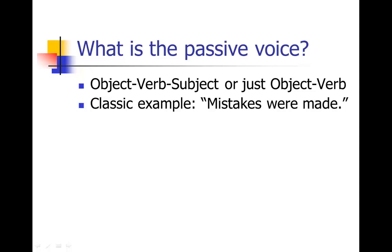The classic example of the passive voice is the sentence: Mistakes were made. Notice that's in the passive voice because the object — what was made — is the mistake, so the object starts that sentence. Then we get the passive verb, were made. And then there's no subject, so we don't know who made the mistakes. They just kind of fell out of thin air. Nobody's responsible. So the passive voice is a way of talking that abdicates responsibility, and that's one of the reasons it exists in the English language.